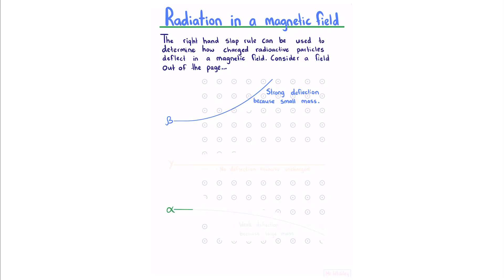For our alpha particle, our fingers are once again out of the page. Our thumb points towards the right. Doing so, your palm should be facing downwards, indicating a downwards deflection. Once again, our deflection is weak because of the large mass. And because our gamma ray is uncharged, we see no deflection.